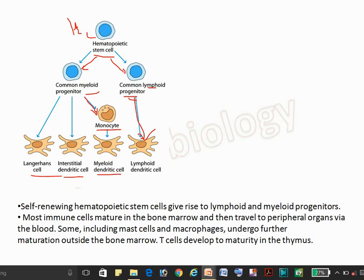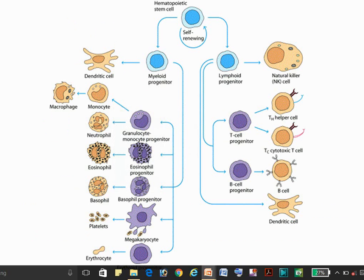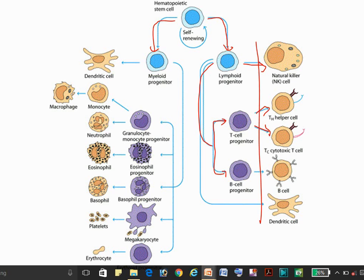Cells regenerate in the bone marrow, and mature T cells mature in the thymus before going to peripheral tissue for further maturation. More precisely, the hematopoietic stem cell divides into myeloid and lymphoid progenitors. The lymphoid progenitor gives rise to NK cells, T cells, and B cells. T cells are further differentiated into Th cells and Tc cells in the peripheral tissue.